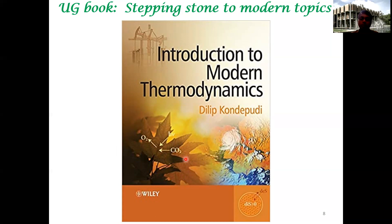Unfortunately, an inexpensive edition of this book is not available — I'm trying to communicate with the author about that. There are some copies in the library. The same author also wrote a graduate-level book called Modern Thermodynamics, co-authored with Kondepudi and Prigogine — Prigogine was a Nobel laureate and was the PhD advisor. The undergraduate book is a textbook you should at least look at if you get interested beyond the grades.